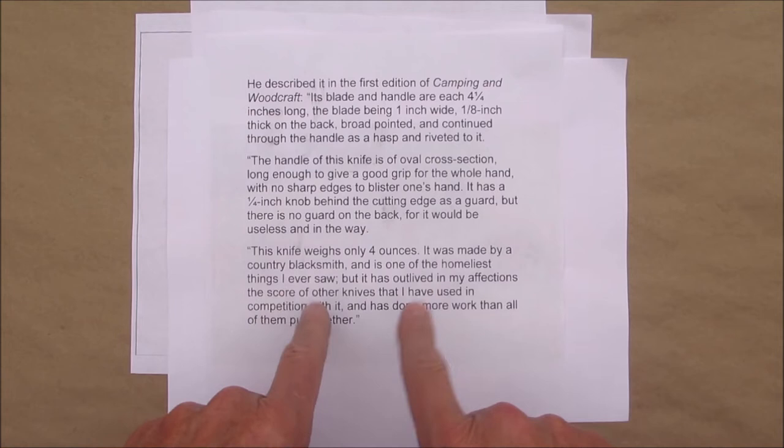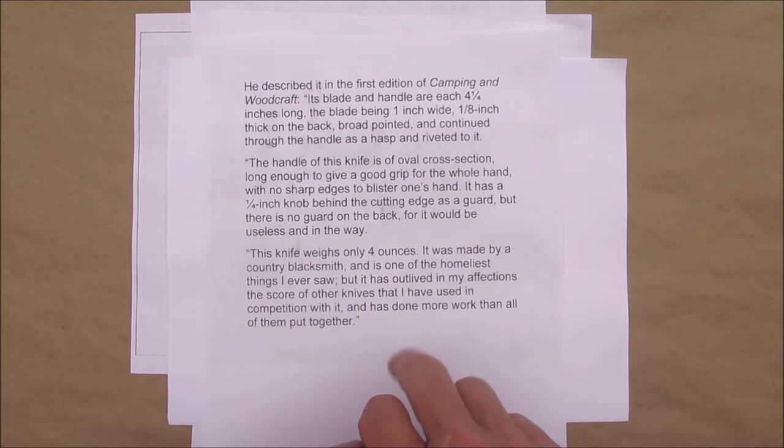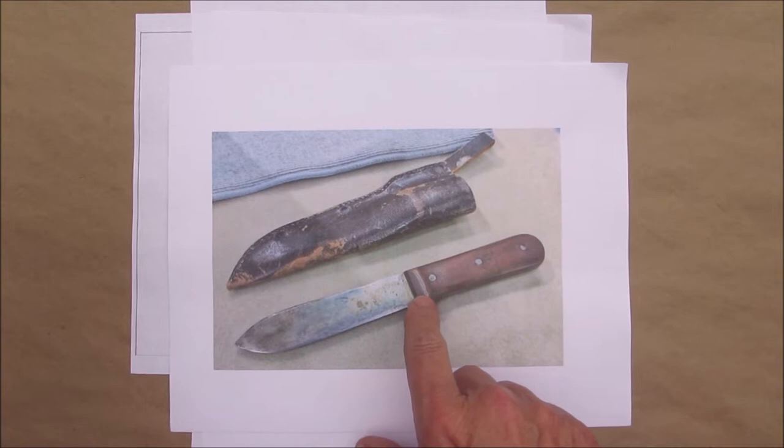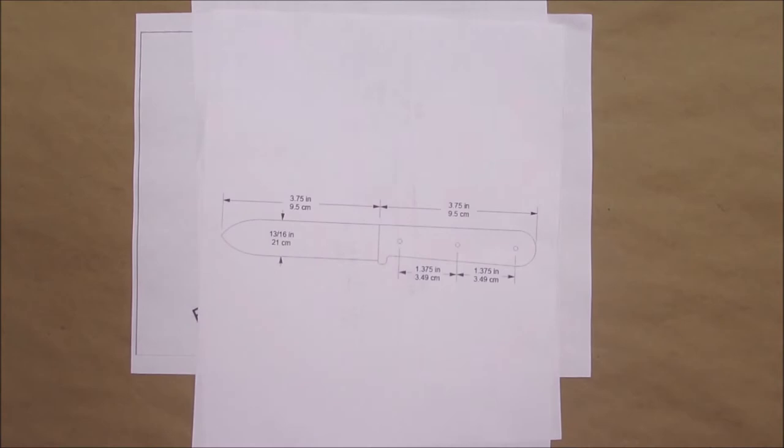It only weighs four ounces. It was made by a country blacksmith. It's one of the homeliest things I ever saw, but it outlived in my affections the score of other knives I've used. So it's kind of a nondescript knife. As you can see, this is that little knob he was talking about. Pretty thin, the handle scales are pretty thin.